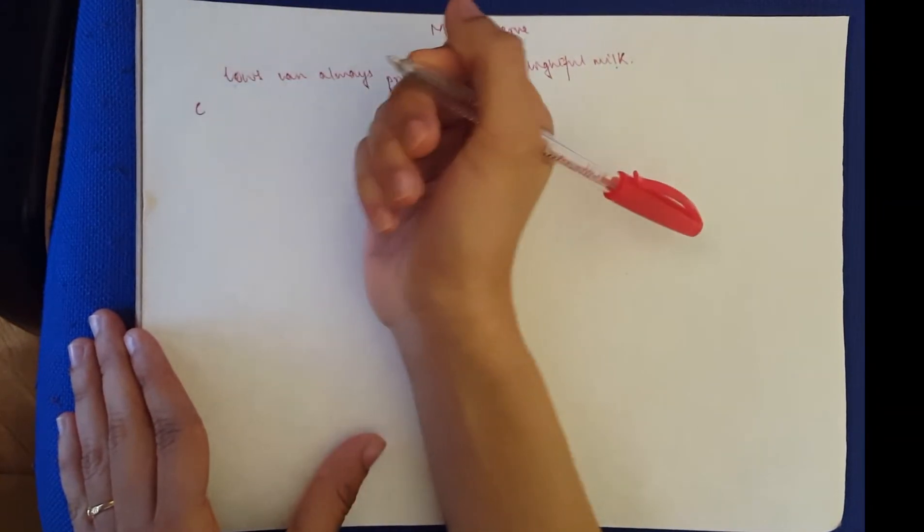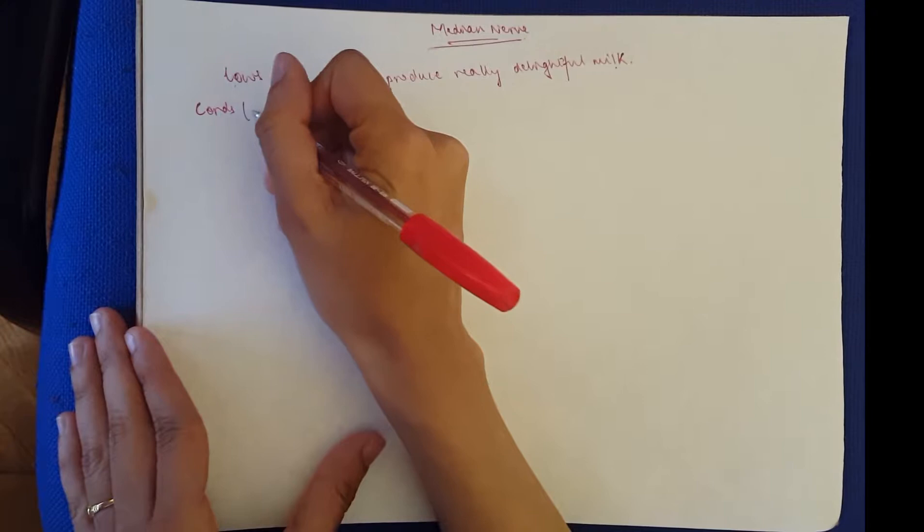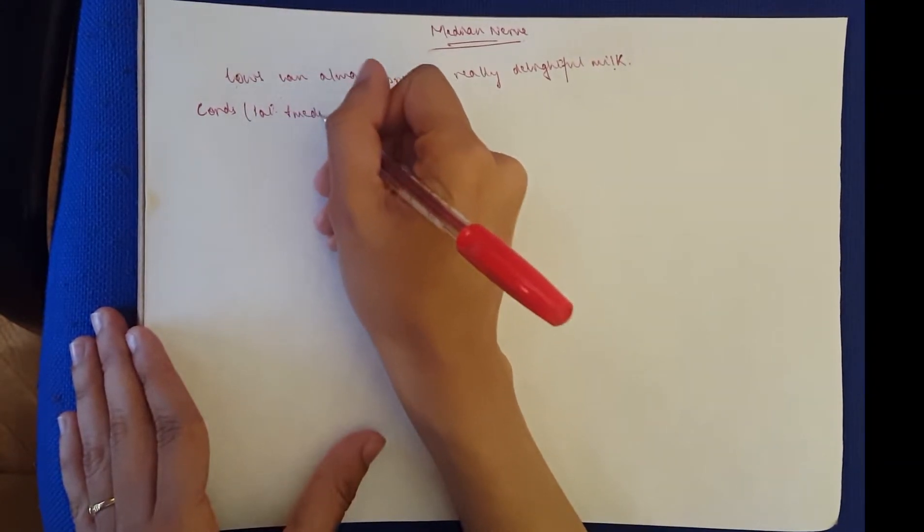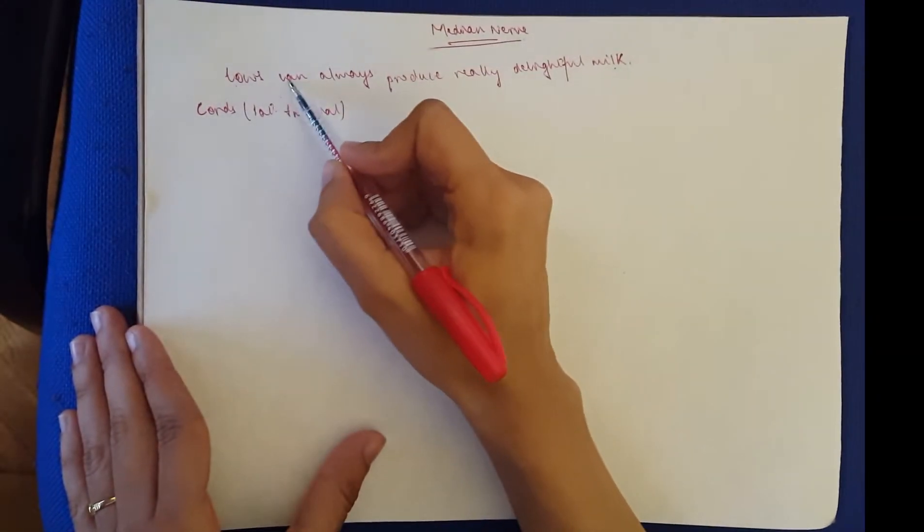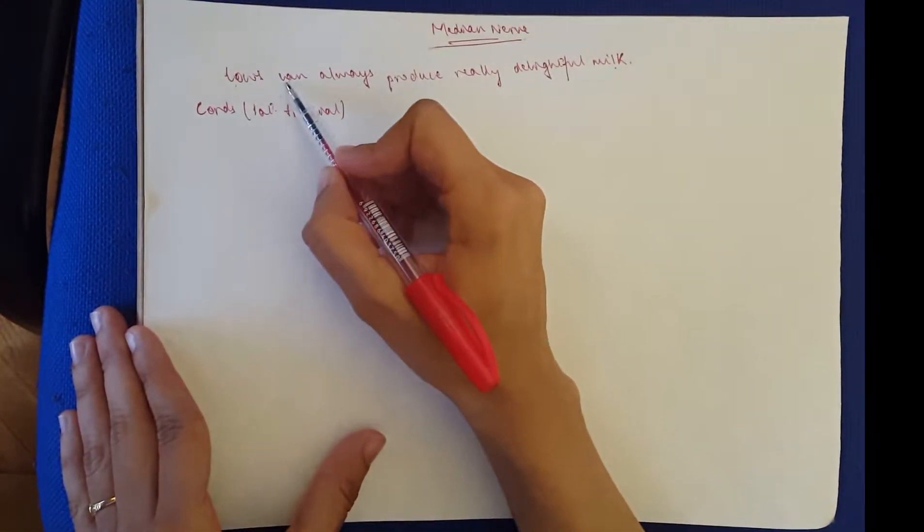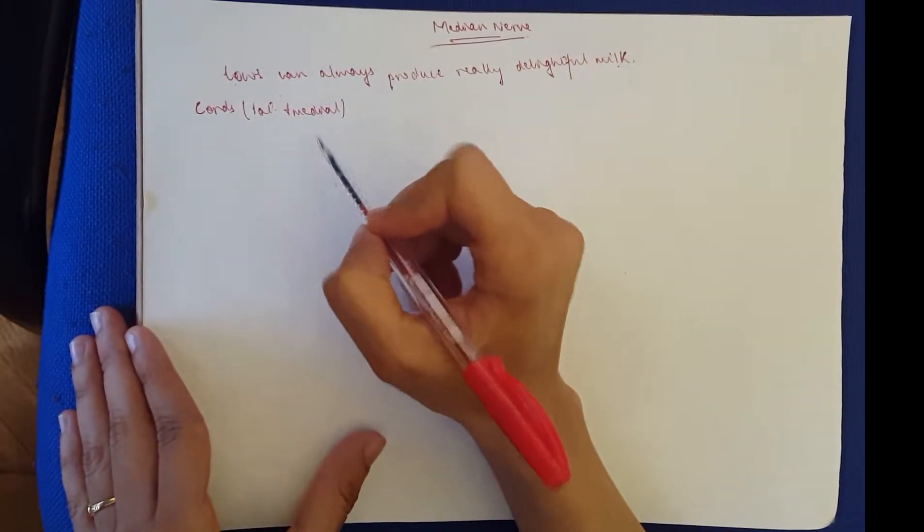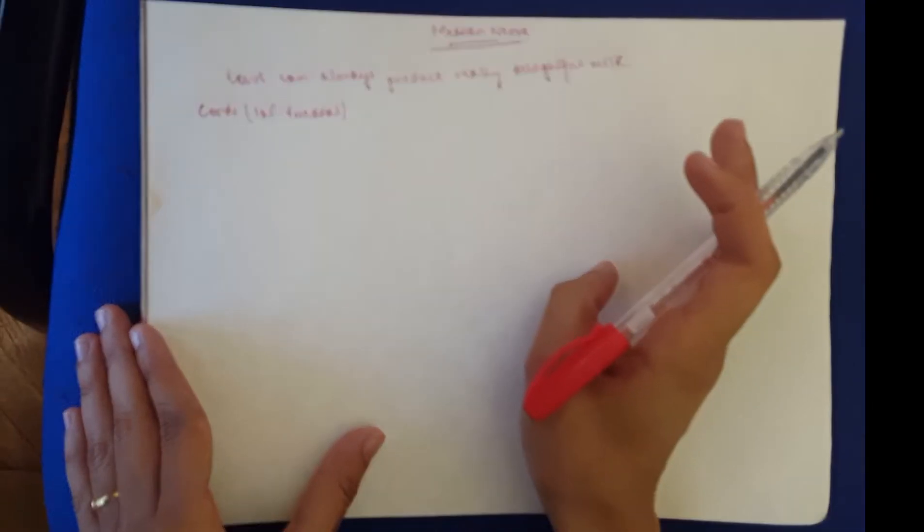Starting with the root, C stands for the cords. Which cords does it come from? It comes from the lateral and the medial cords of the brachial plexus. The other C is for the tunnel that it passes. The median nerve is the only nerve that passes through the carpal tunnel in the hand, which I'll draw later.